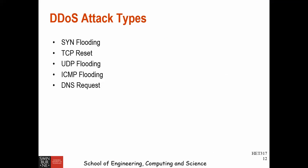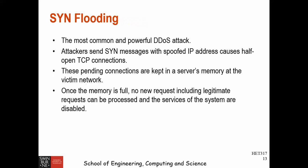DDoS attack types include: SYN flooding, TCP reset, UDP flooding, ICMP flooding, and DNS request. The first type, SYN flooding, is the most commonly used and powerful DDoS attack. Attackers send messages with spoofed IP addresses causing half-open TCP connections. These pending connections are kept in server memory; once memory is full, no new requests — including legitimate ones — can be processed and the system's services are disabled.